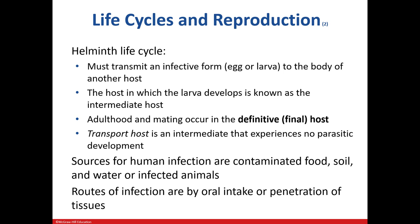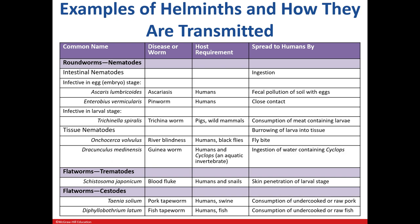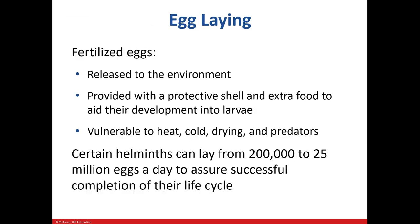Common ways that we acquire helminth infections include consumption of contaminated food or water. There are also worms that can penetrate and burrow through our skin. The eggs are very well protected to allow for survival of the helminth — some worms can lay up to 25 million eggs per day just to make sure they can continue their life cycle.